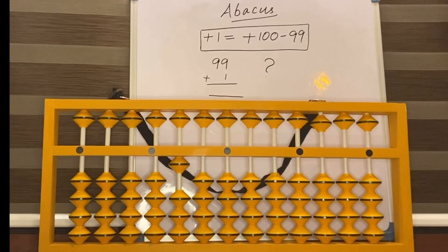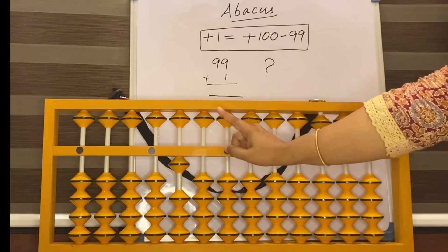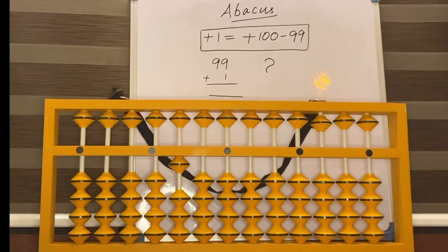Now, what is the answer? 100. In the 100 place, 1 bead is here, 0 in the 10 space, 0 in the 1 space. The answer is 100.